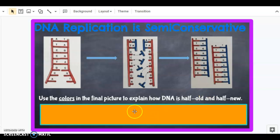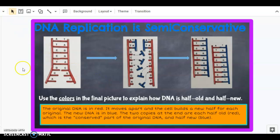Take a minute and use the colors red for the original, blue for the new, to explain how this DNA at the end is half old and half new. If you need help you can pause this video while you do that and then check your answer by coming back here. Were you able to explain it? Here's my explanation. The original DNA is in red and moves apart, and the cell builds a new half for each original. The new DNA is in blue. The two copies at the end are each half old red, and that is the conservative or conserved part, and half new blue.